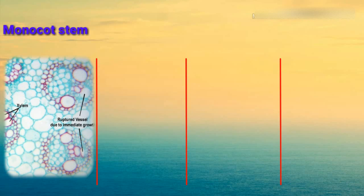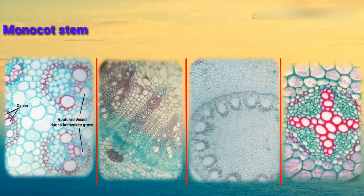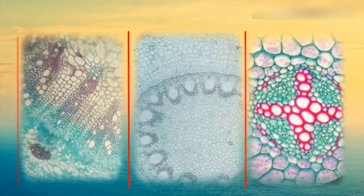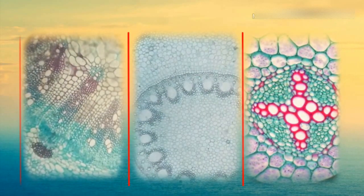So here we have three remaining slides — we have to distinguish monocot root, dicot root, and dicot stem among them. Most probably you can easily find an oil duct among them. Can you identify the oil duct among these three slides? I'm going to give you some time — try it by yourself.